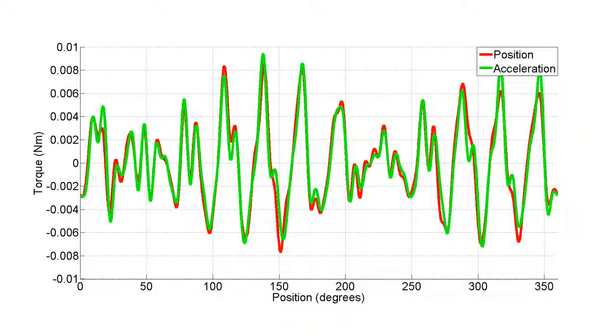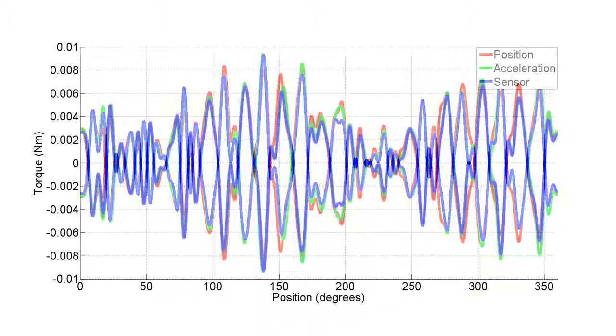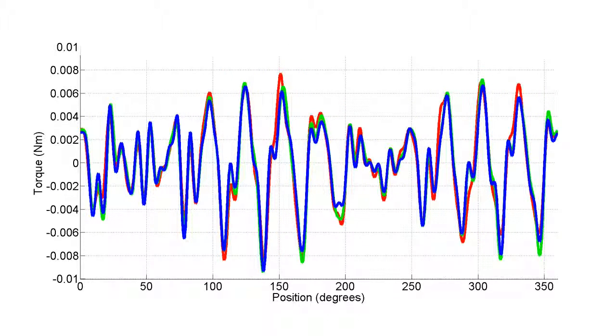You can see these two maps agree nicely with each other, but to double check, we used a force torque sensor during testing to validate the two methods. Now we can invert the cog map and feed forward these torques, currents, or voltages.